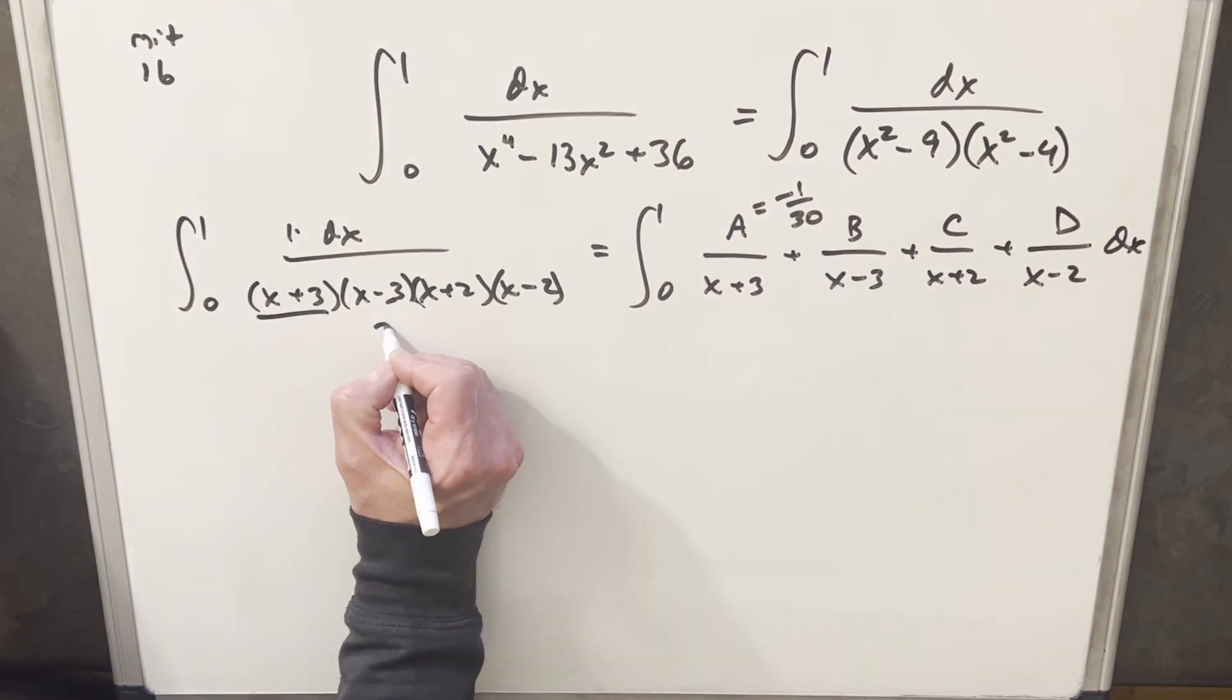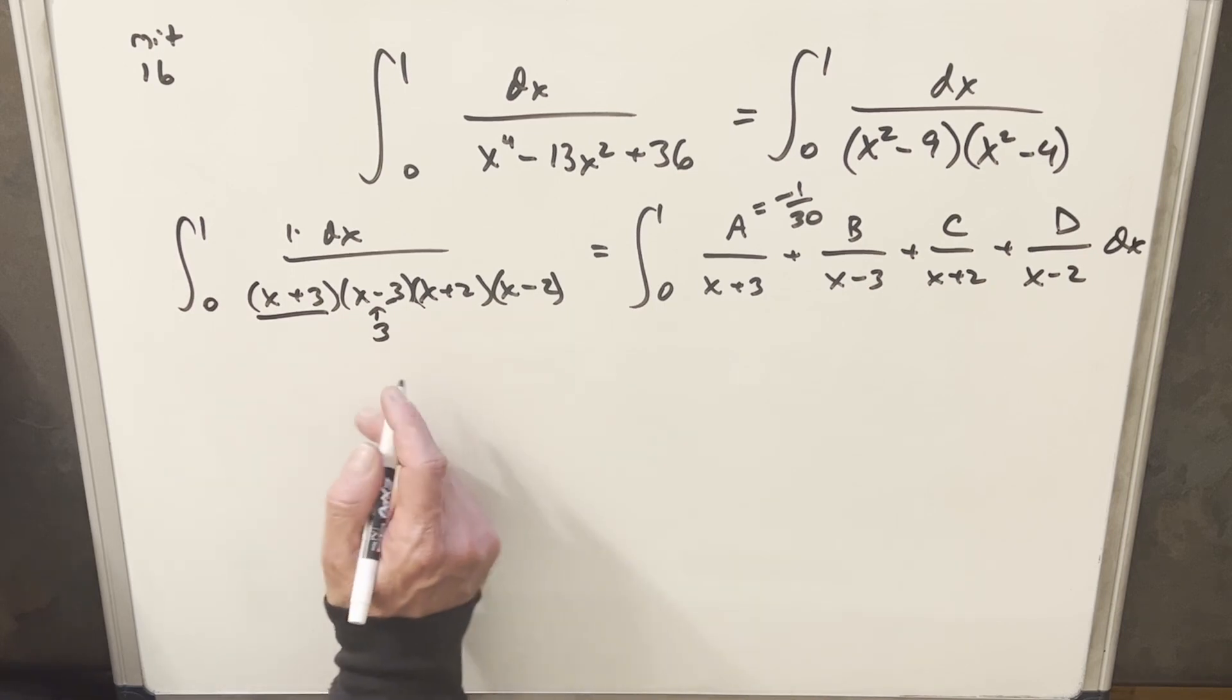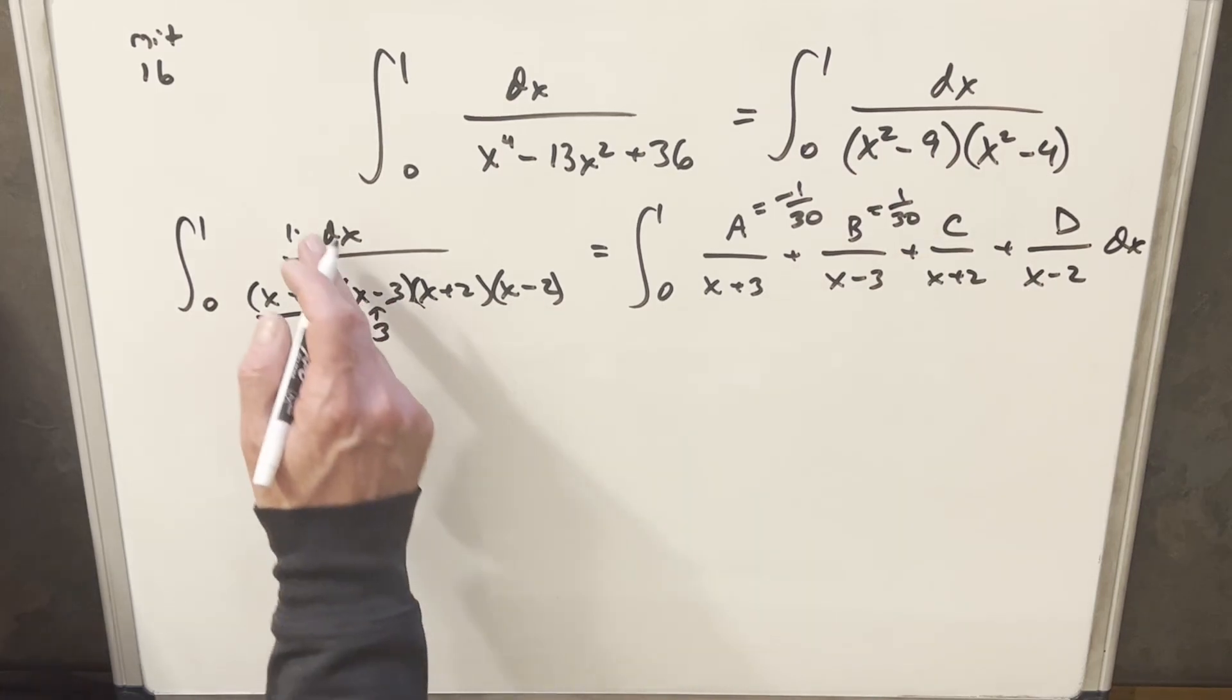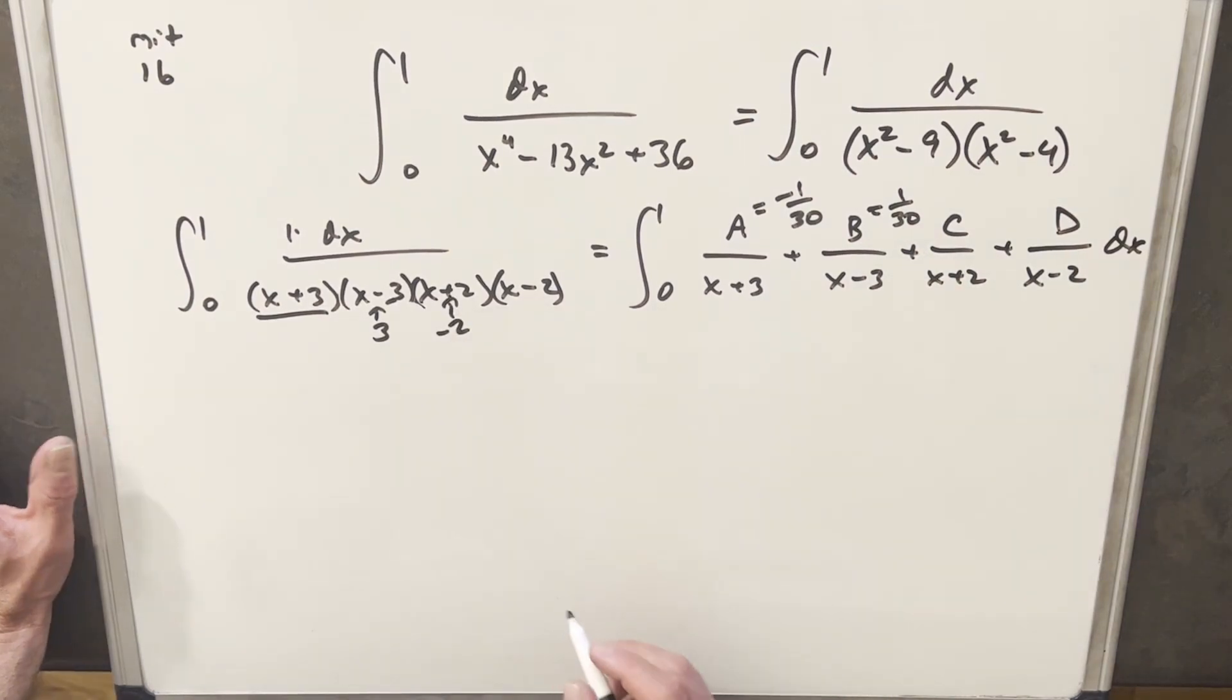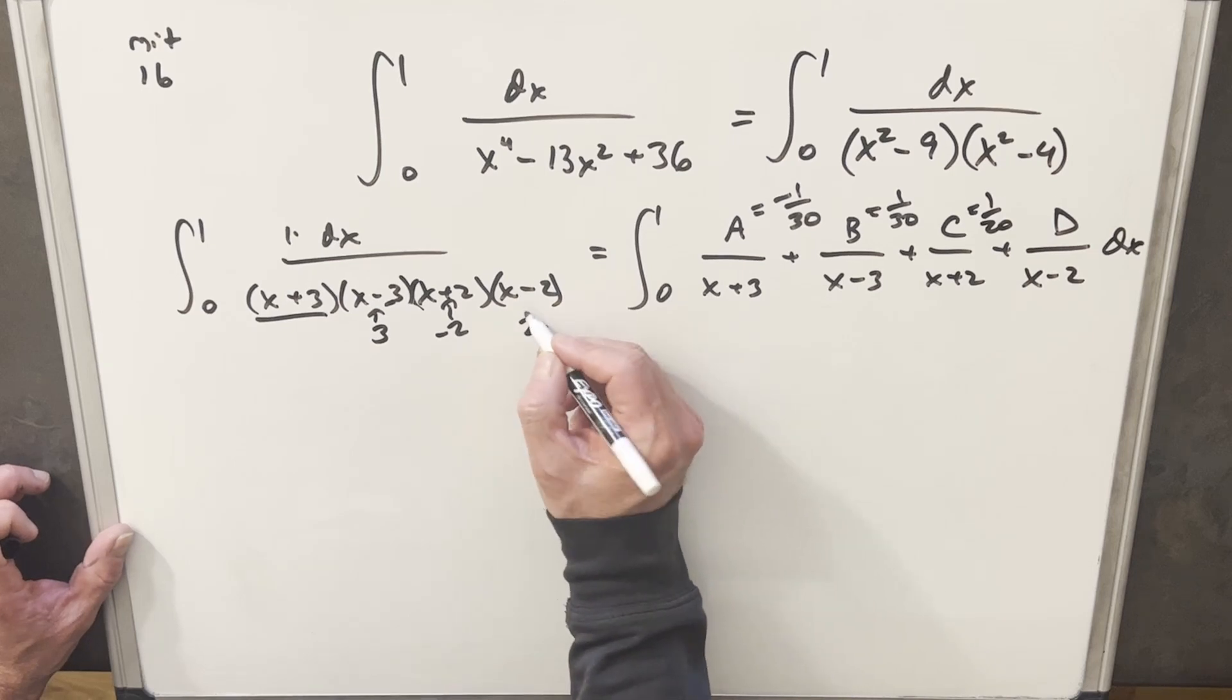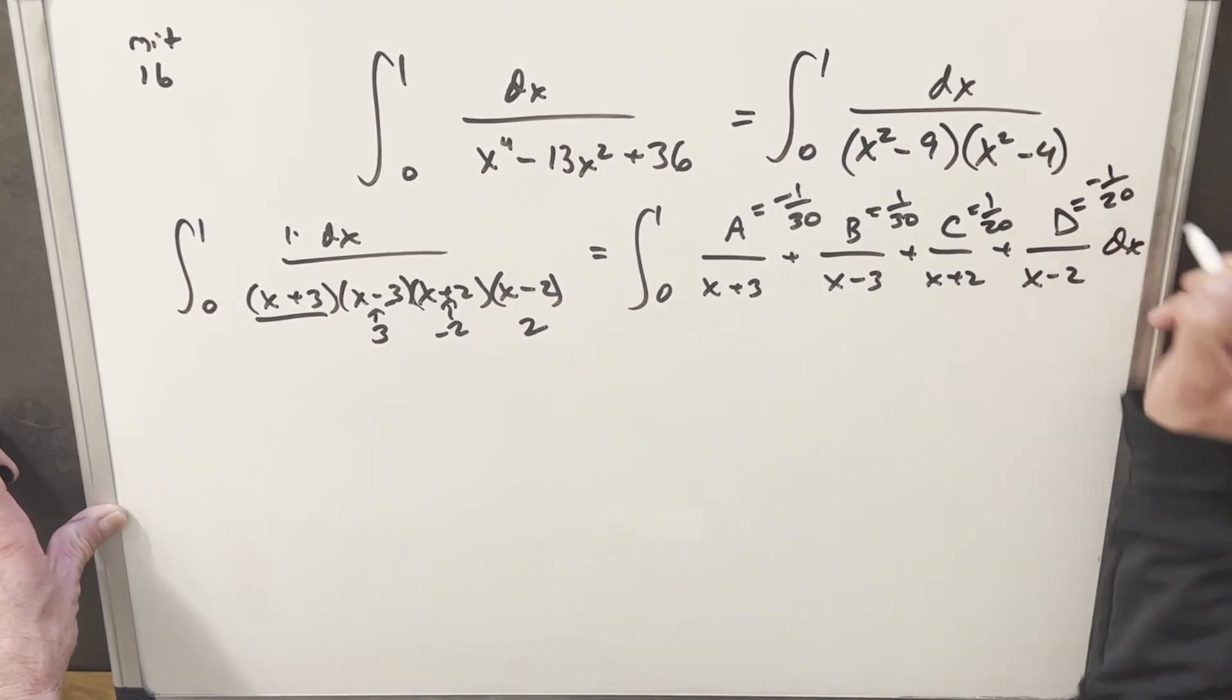Doing the same thing for the next term, we'll plug a 3 in here. Okay, we plug the 3 into all these other terms, and we multiply that out, it's gonna come up to 1 over 30. What'll happen when you plug this in, you'll have 6 times 5 times 1 is 30. 1 over 30 gives us our 1 over 30 here. Then we'll plug a minus 2 in here, and then we do that for our c value, we're gonna have 1 over 20. And then for this last term, we're gonna plug a 2 in here, and we do that, we're gonna get for d, we're gonna have minus 1 over 20.